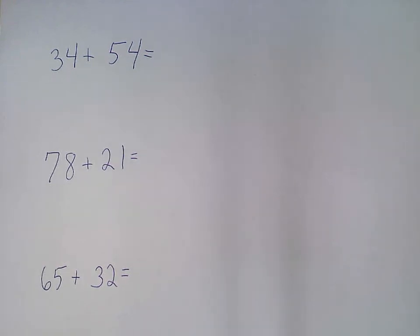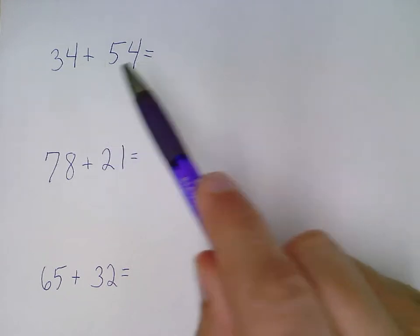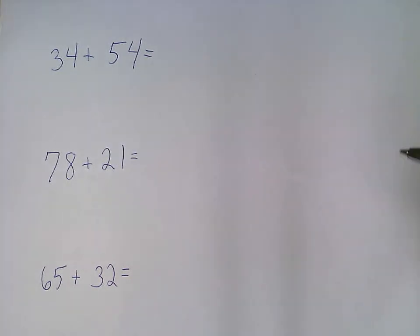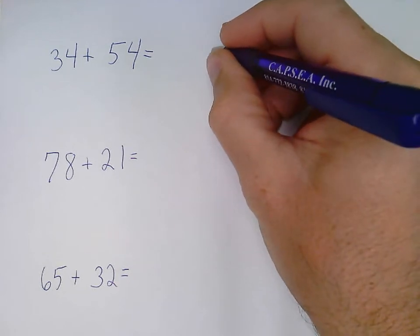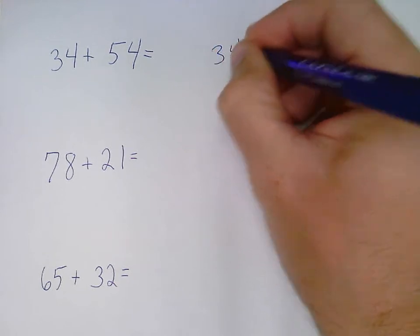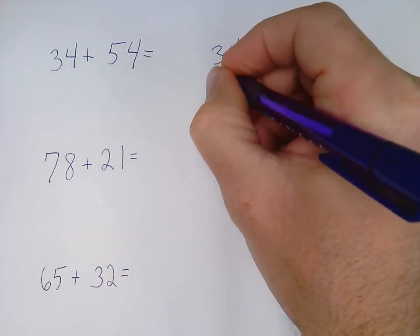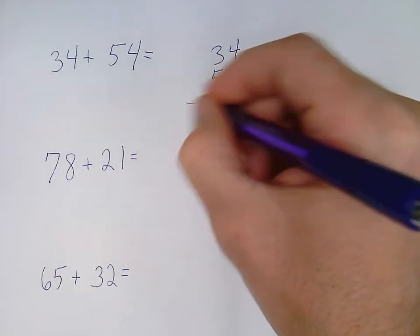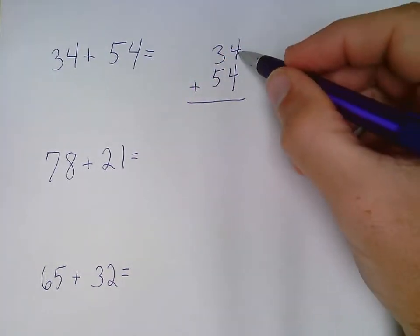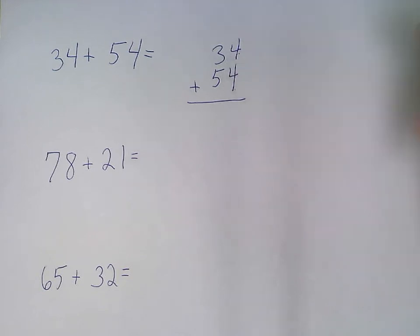I'm going to talk about adding two-digit numbers together. The first thing I need to do is take these numbers that are horizontal and make them vertical. When I do that, it is very important that I line the place values up. My ones are lined up with my ones, my tens are lined up with my tens.